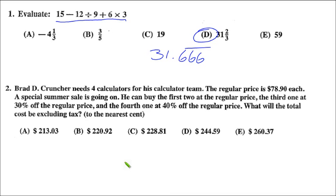It's a simple percentage problem. I'm going to actually color code this. He buys the first two calculators at regular price. And that means we have to take $78.90 and multiply that by two. The third one is at 30% off the regular price. The trick here is the word off. We are adding some more.